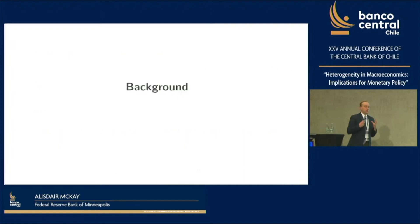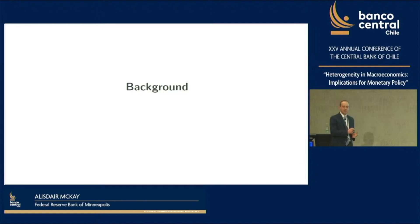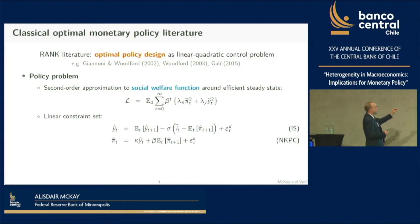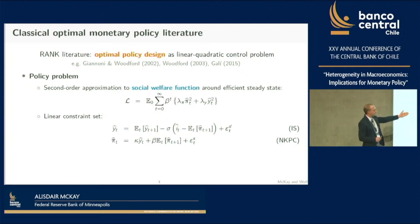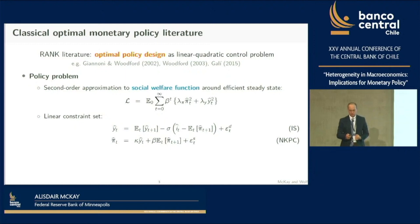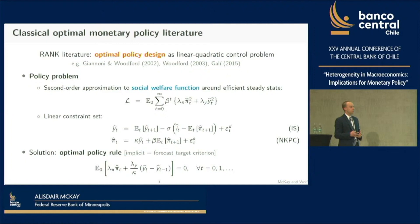Let me give some background to set the stage. The standard approach to optimal policy in the representative agent New Keynesian world is to set up a linear quadratic control problem: take a second order approximation to the social welfare function around an efficient steady state, yielding a loss function minimizing deviations of inflation and output, subject to an IS curve and a Phillips curve. What you get is an implicit rule giving a relationship between inflation and the change in the output gap—we'll find similar implicit rules for the HANK model.